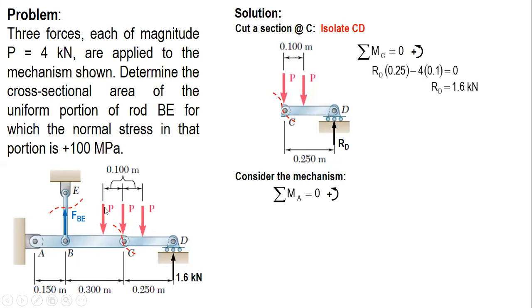While for the three forces P: for this P, the distance of this force to A is 0.15 plus 0.3, which is 0.45 minus 0.1. For this one it's 0.45, and for this one it's 0.45 plus 0.1, which is 0.55.